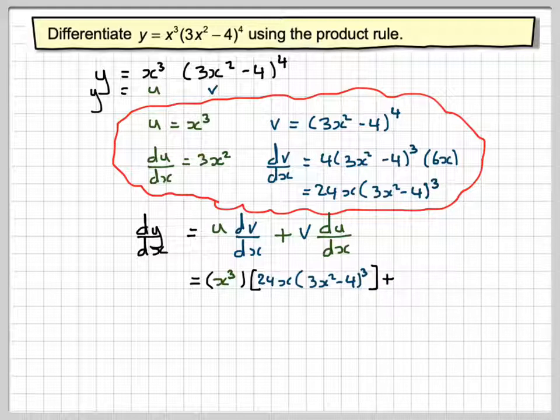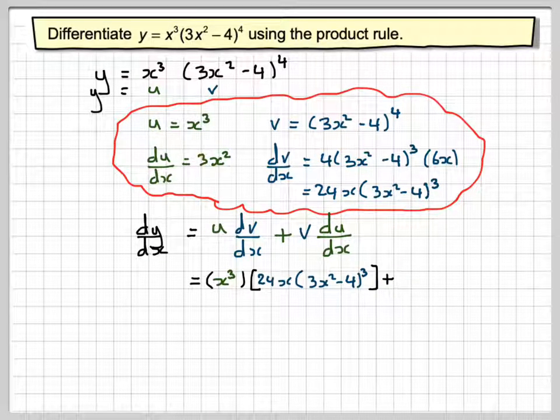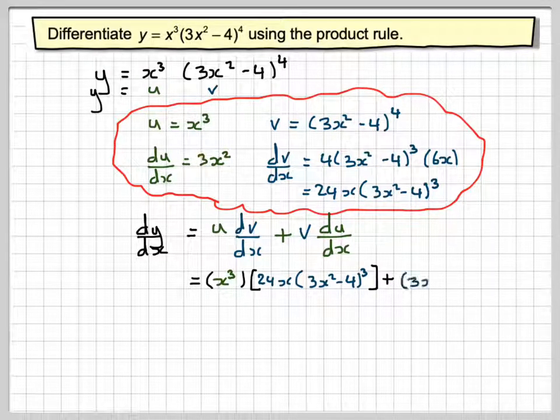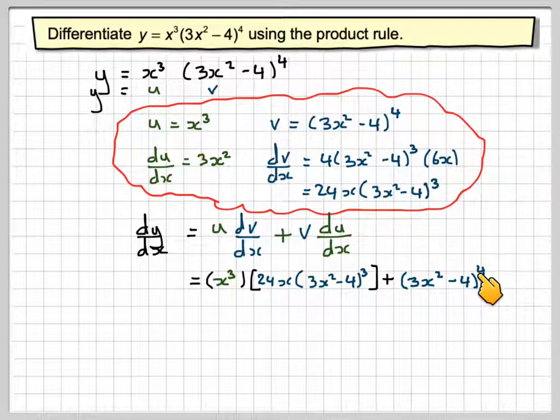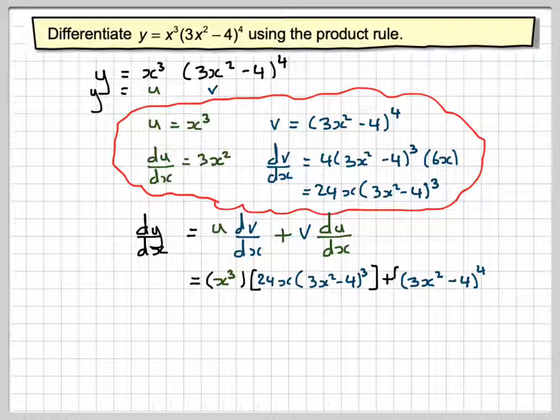Plus v, which is going to be 3x squared minus 4 to the power of 4, times du by dx, which is going to be 3x squared.